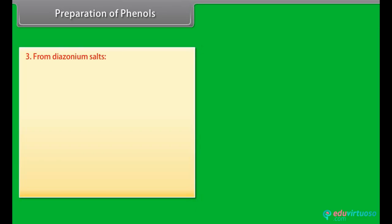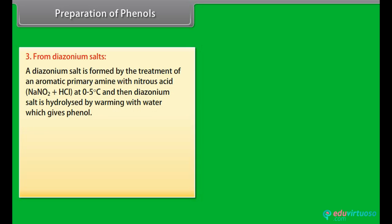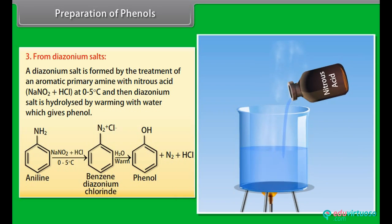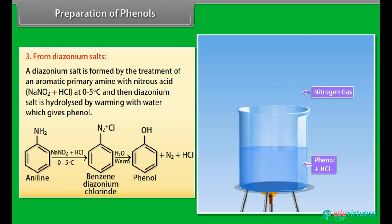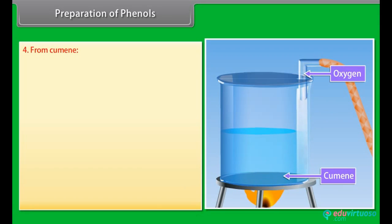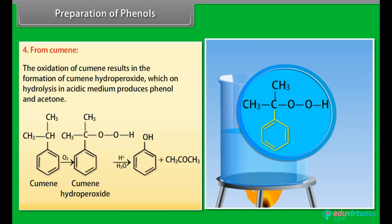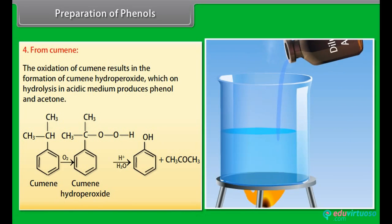Preparation of phenol from diazonium salts. A diazonium salt is formed by the treatment of an aromatic primary amine with nitrous acid at 0–5°C. The diazonium salt is then hydrolyzed by warming with water to give phenol. For example, aniline treated with nitrous acid at 0–5°C gives benzene diazonium chloride; adding warm water then forms phenol, nitrogen and hydrochloric acid. From cumene: oxidation of cumene gives cumene hydroperoxide, which on hydrolysis in acidic medium produces phenol and acetone.